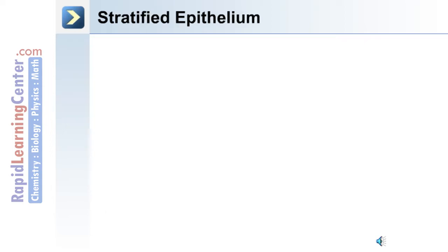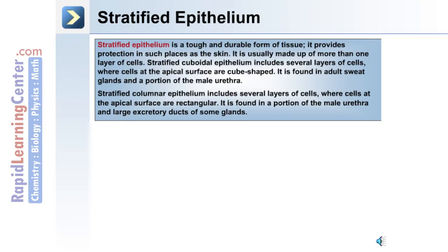Epithelial cells in more than one layer are known as stratified epithelium. This is a tough, durable form of tissue that provides protection in such places as the skin. Stratified cuboidal epithelium includes several layers of cells where cells at the apical surface are cube-shaped, and it is found in adult sweat glands and a portion of the male urethra. Stratified columnar epithelium includes several layers where the cells at the apical surface are rectangular, found in a portion of the male urethra and large excretory ducts of some glands.